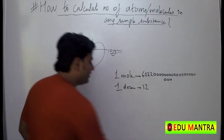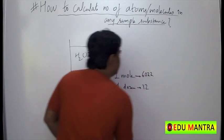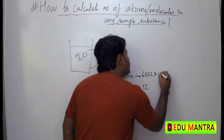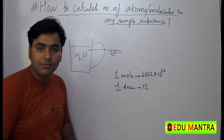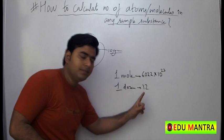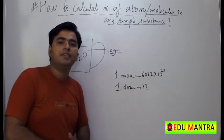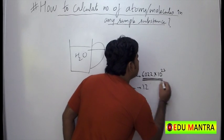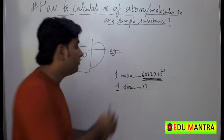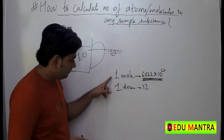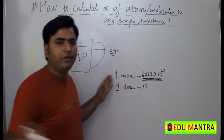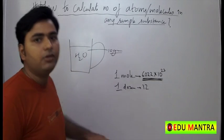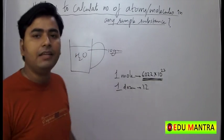Similarly, if it is one mole, it has to be 6.022 into 10 raised to 23. Just like one dozen equals 12 units, one mole equals 6.022 × 10²³. You need to remember this. It is a pure number, very useful for counting the number of atoms or molecules.